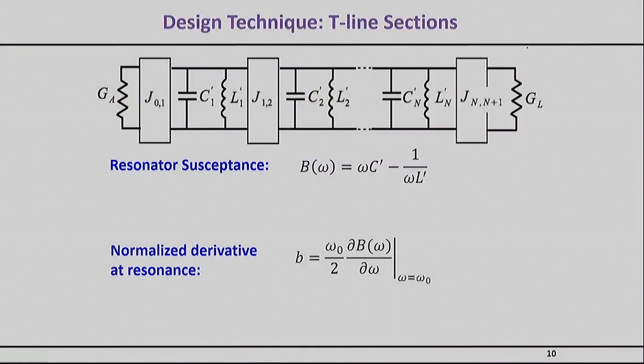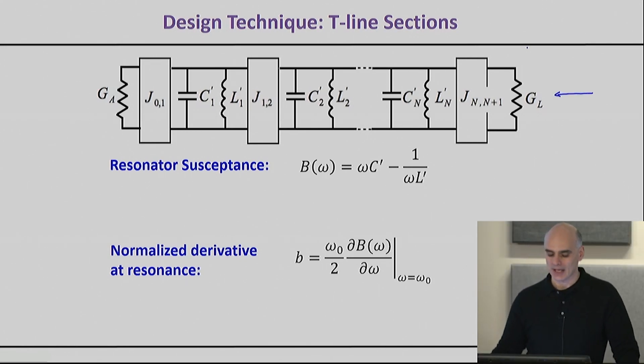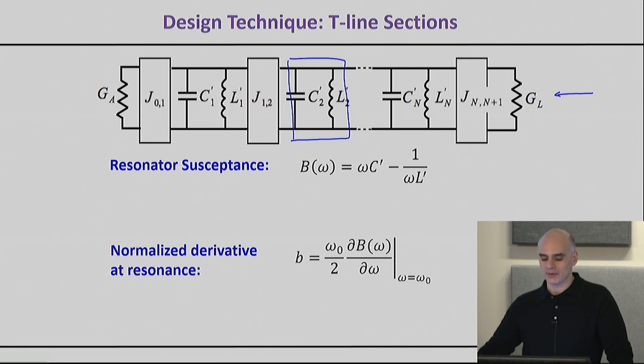Where we left things off is that we've been able to derive our circuit shown here with the J inverters and the resonators. We've chosen to work with shunt resonators. The challenge is that all the equations we've derived so far are essentially linking these J inverters with the actual capacitance values and actual inductance values.